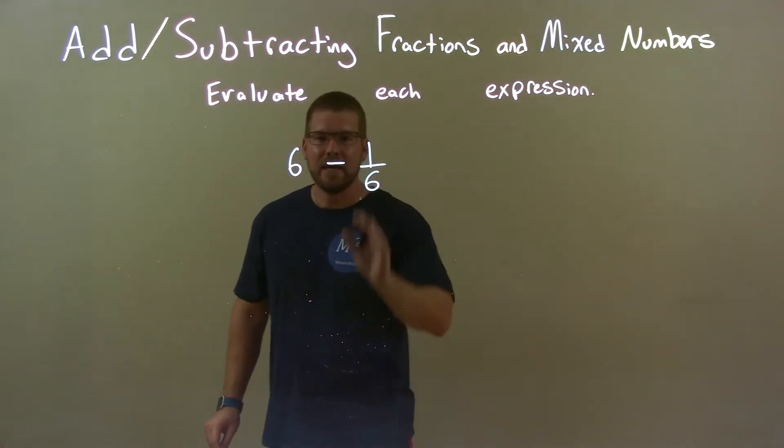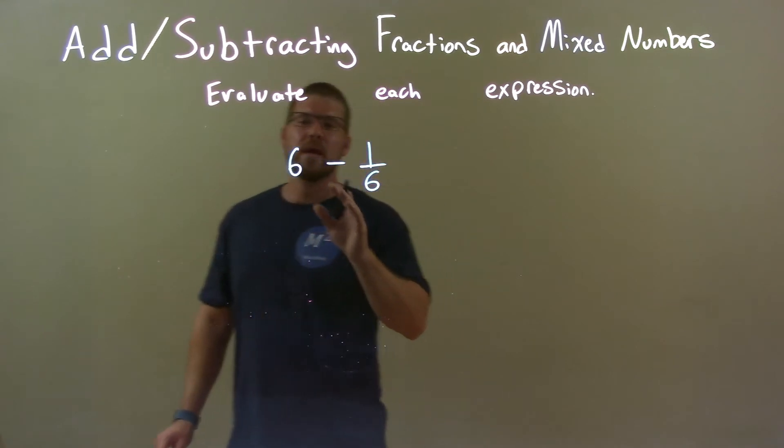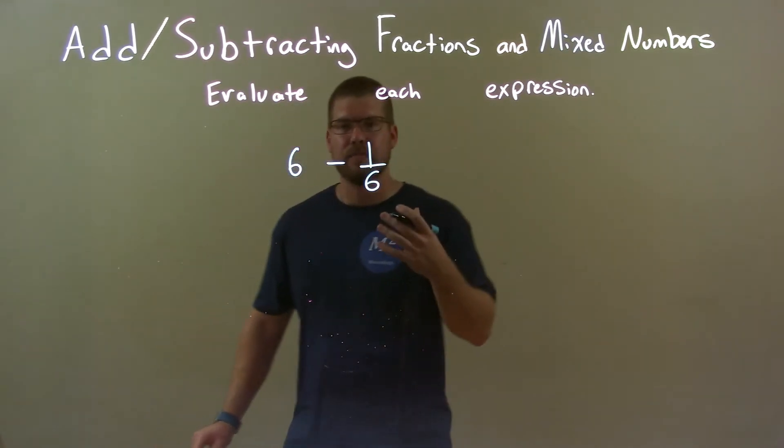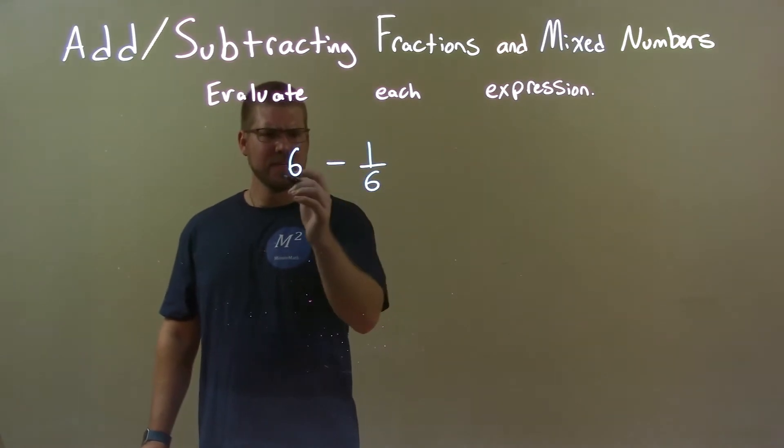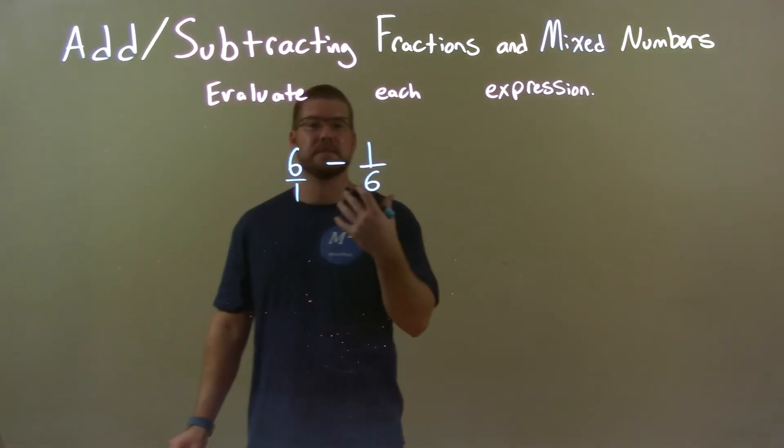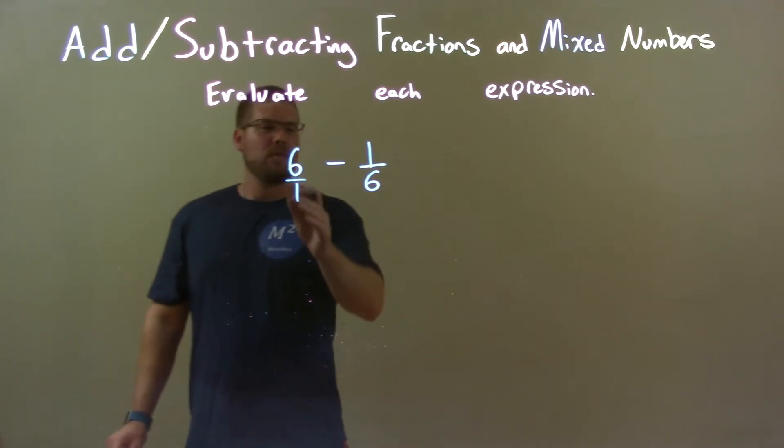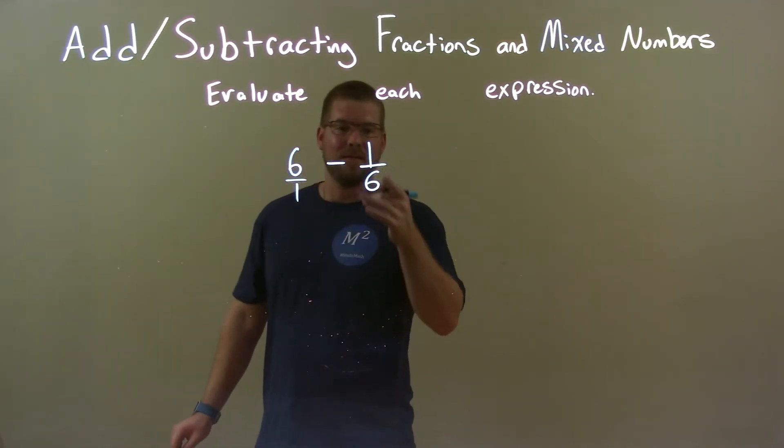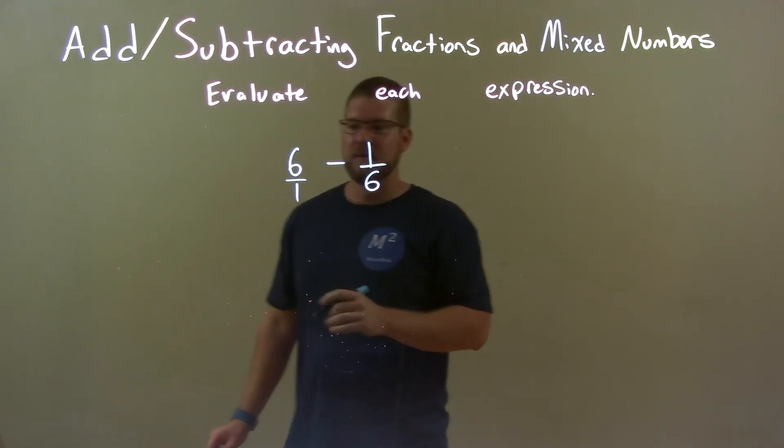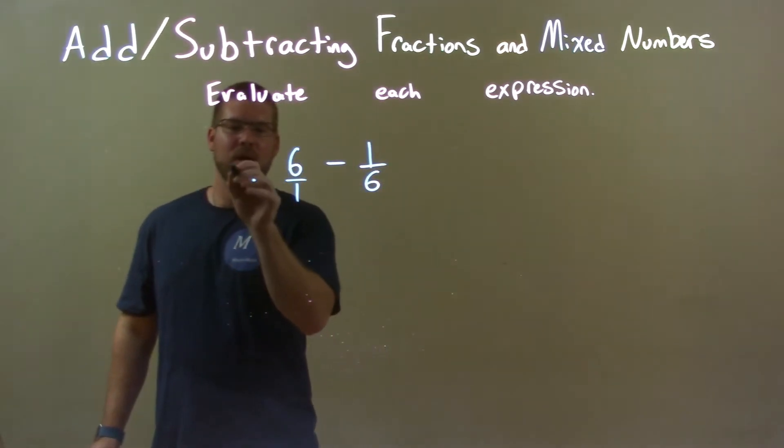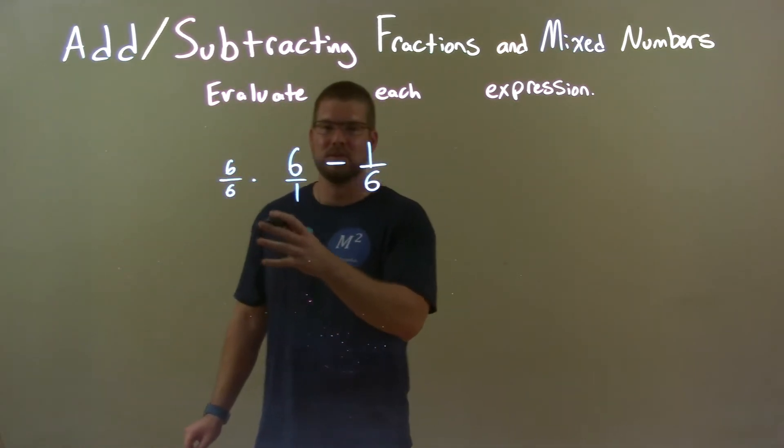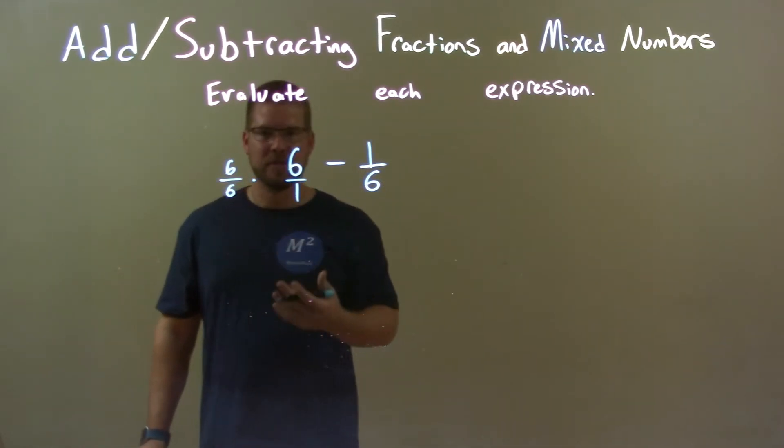Now, the key here, the tricky part is we can only combine these numbers if they have the same base with subtraction, right? So 6 has really a base of 1. 6 over 1 is just 6. So 6 over 1 minus 1 sixth. Well, to get 6 over 1 to have the same base as this 1 over 6, I'm going to multiply this by 6 over 6. And 6 over 6 is essentially the number 1, and it doesn't really change anything.